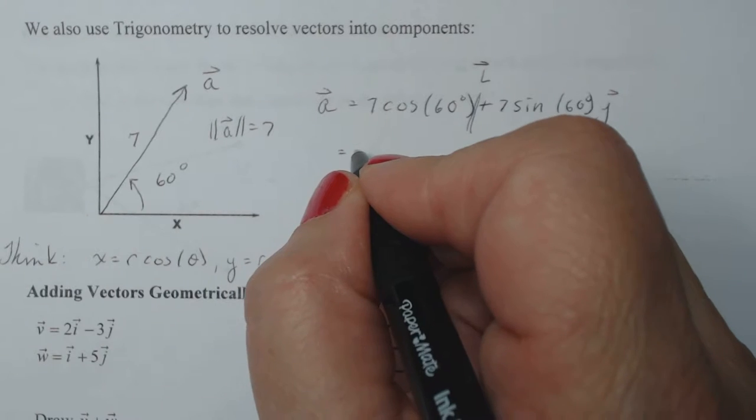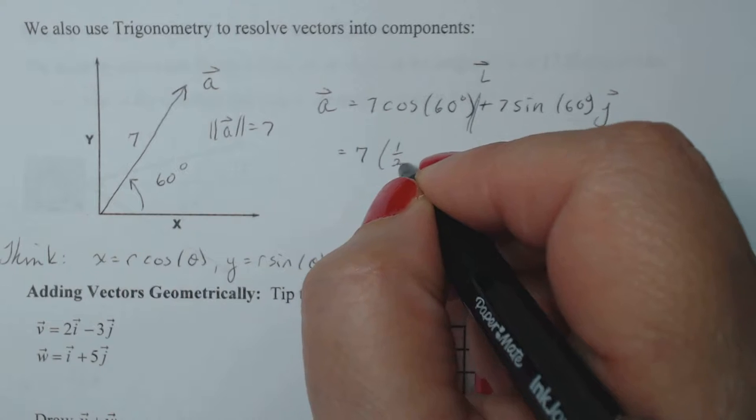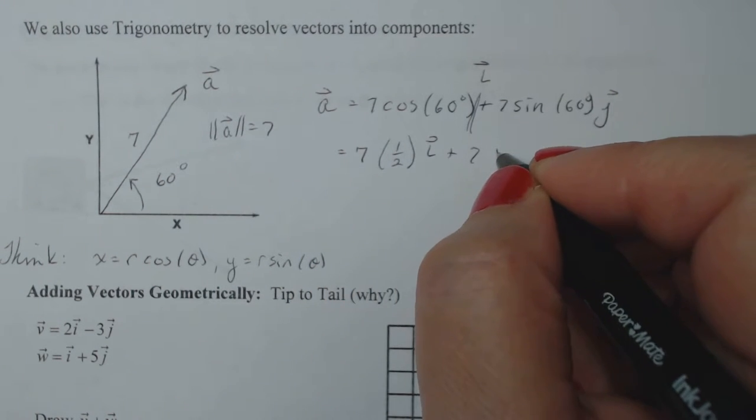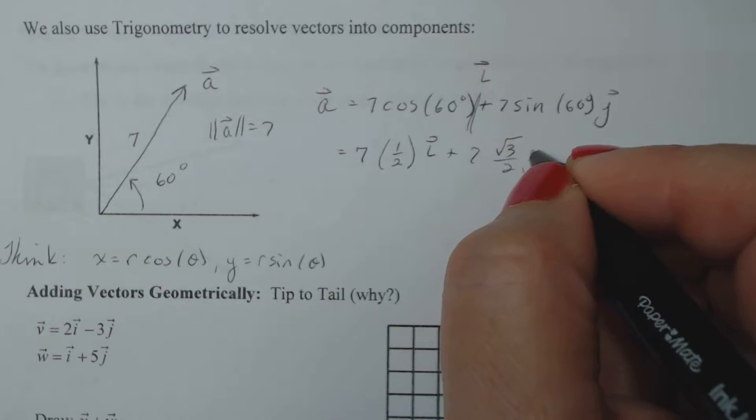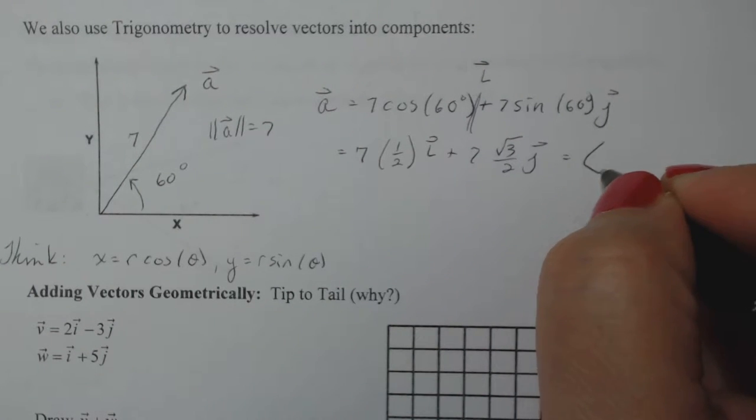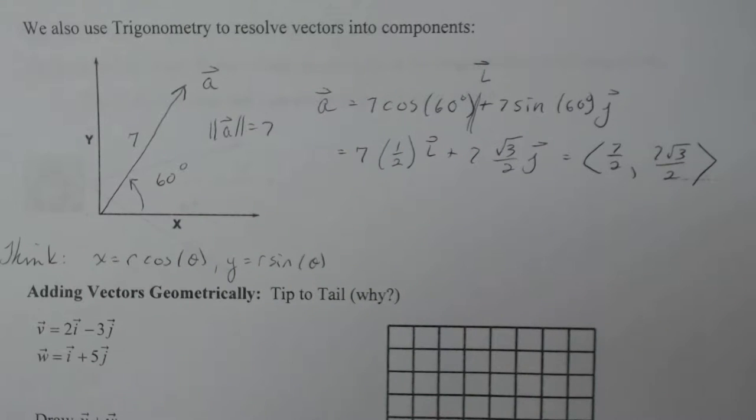So if I continue this seven, cosine of 60 is one half. And then the sine of 60 is square root of three over two. So if I was going to simplify that, I would write it as seven over two I and seven square root of three over two J. Again, getting in the habit of doing things exactly. Stop with the decimals.